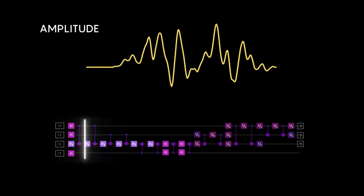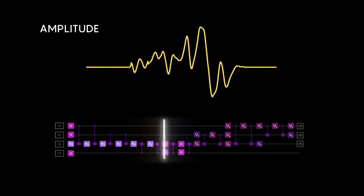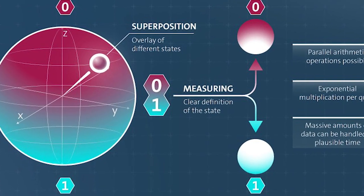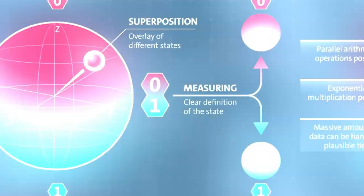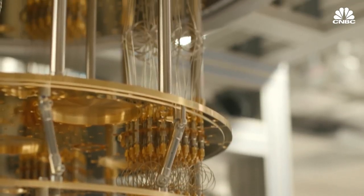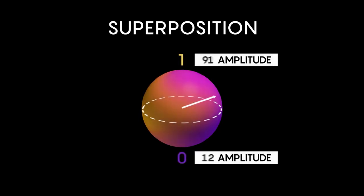Quantum computing is based on a flexible arrangement of amplitudes. A qubit resides in a state known as superposition before measurement. Consider it the quantum equivalent of a probability distribution, with each qubit having a certain amplitude for being 0 and a different amplitude for being 1.